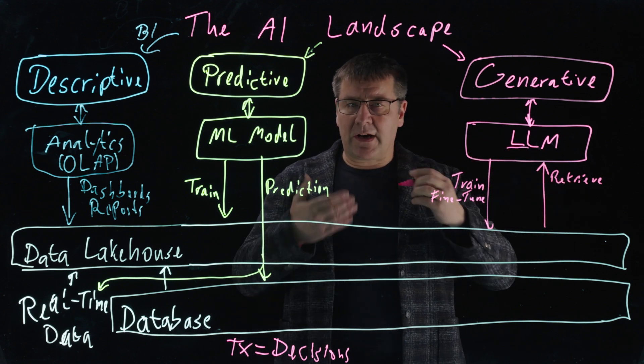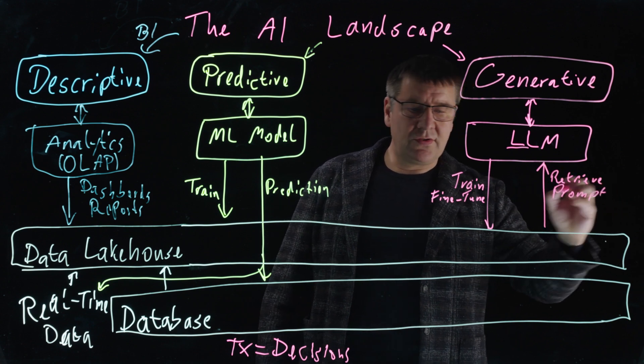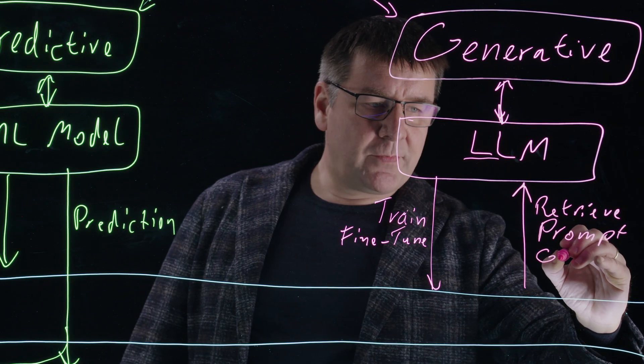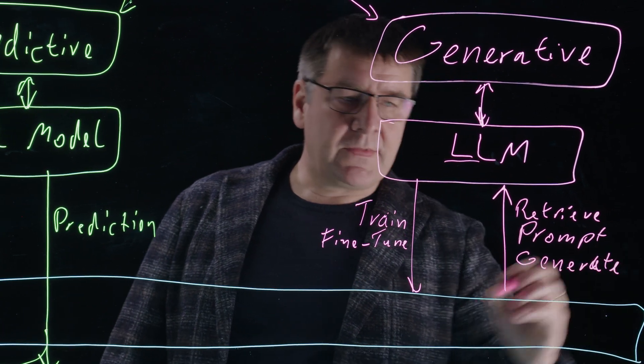You retrieve data and you apply it to the application that sends this data then to your large language model. This interaction with a large language model is typically called prompting. You send it a so-called prompt. And then, this large language model generates new data as the output of this prompt.